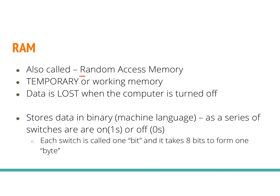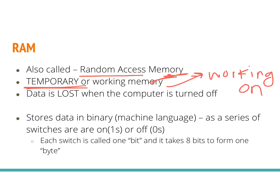RAM stands for Random Access Memory and is temporary or working memory — it's called working memory because it's essentially what you're currently working on. It's not a permanent storage device. One thing that is tricky about RAM is data will be lost when the computer is turned off. That's why if people lost all their data when the computer turned off, it's because they were storing things in RAM and weren't saving to a more permanent location. We always needed to save so that we didn't lose anything that was only in our temporary RAM.